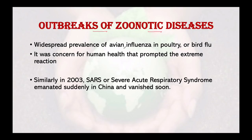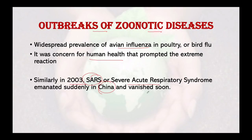Regarding frequent outbreaks of zoonotic diseases: not so long ago, widespread prevalence of avian influenza — commonly known as bird flu — created nationwide and even global panic, resulting in the culling of millions of poultry birds. This was driven by concern for human health, which prompted extreme reactions and the subsequent establishment of many containment protocols, managed quite effectively. Similarly, in 2003, SARS (Severe Acute Respiratory Syndrome) emerged suddenly in China and vanished soon due to strict policies.